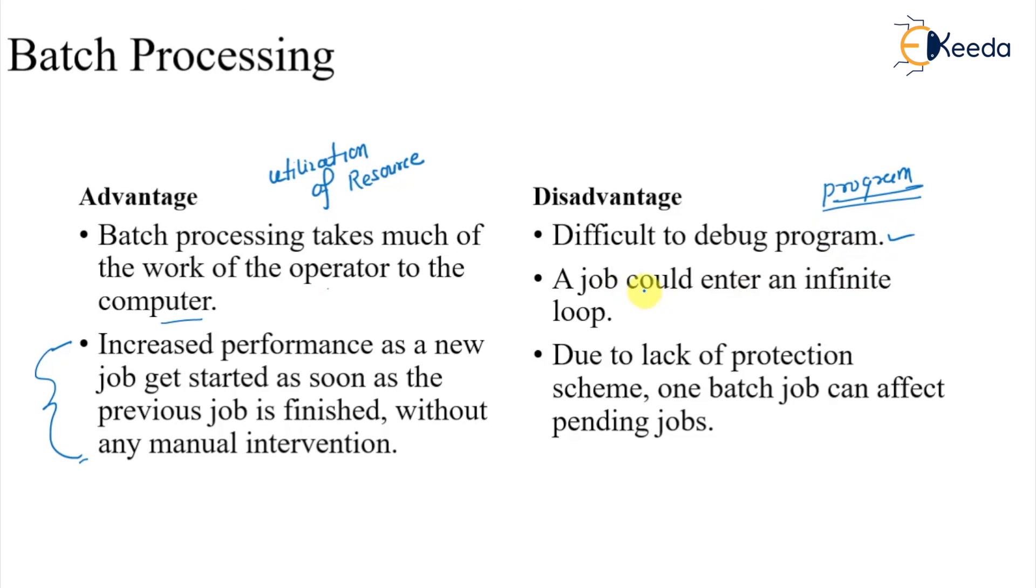Another problem can be that if a job runs into an infinite loop without any manual information, then the operator will keep on guessing what exactly happens and loss of work will happen. So that is our batch processing system.